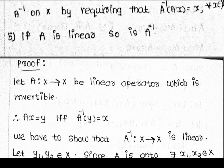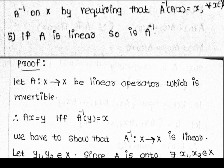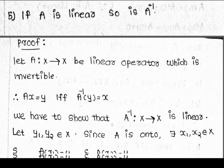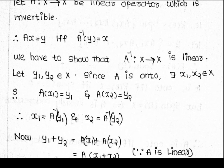A(x) = y if and only if A⁻¹(y) = x. We need to prove that A⁻¹, from Y to X, is linear.